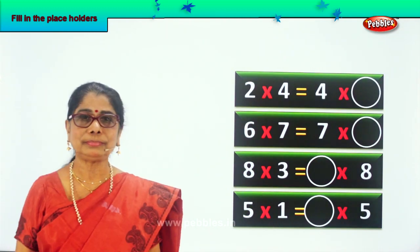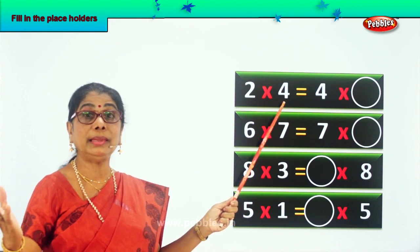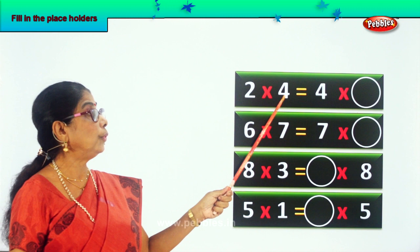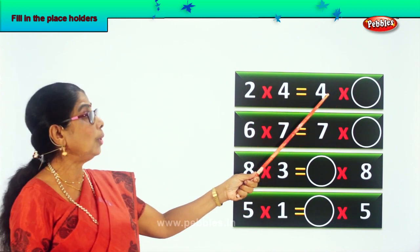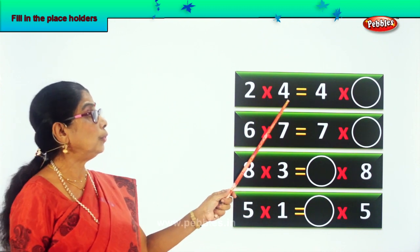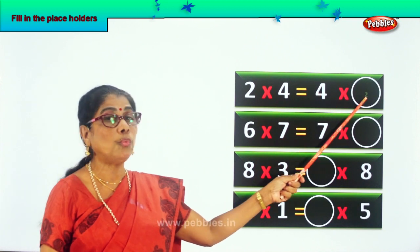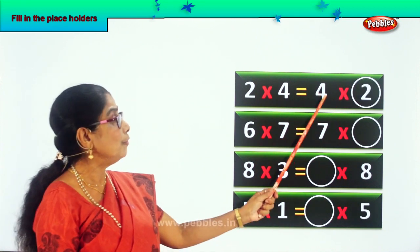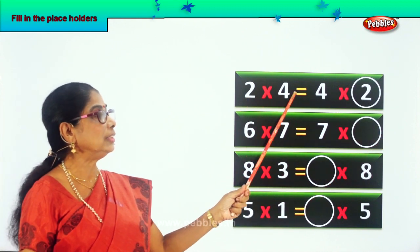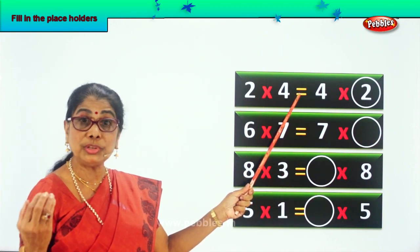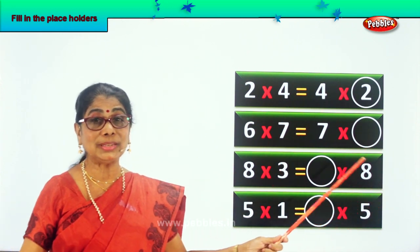Let's look at another sum. Look. 2 into 4. What are 2 fours? 8. 2 into 4 equals 8. And 4 into what will give you 8? Very good — 4 into 2. So 2 into 4 is also equal to 4 into 2. Now you get the placeholders correctly.